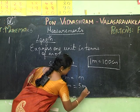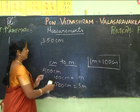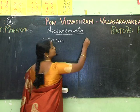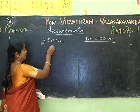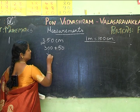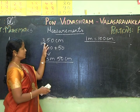Let's see another example: 350 centimeters. How will I write 350 centimeters in meters? One meter equals 100 centimeters. So 350 is 300 plus 50. The 300 can be written as 3 meters, and the 50 as 50 centimeters. So 350 centimeters can be written as 3 meters and 50 centimeters.